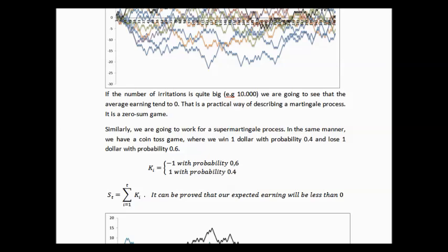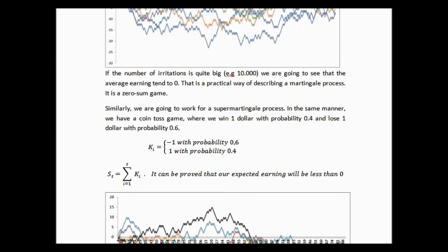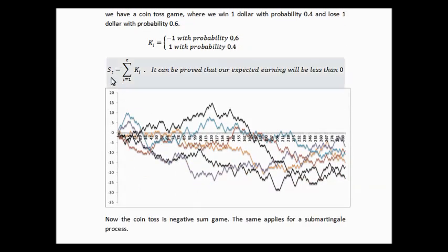Similarly, we are going to work for a supermartingale process. In the same manner, we have a coin toss game, where we win $1 with probability 40% and lose $1 with probability 60%. As we can see, it is more likely to lose in a coin toss. This is an unfair game for us. Again, our earnings could be described by a stochastic process S, which is simply the sum of all random variables for t coin tosses. It can be proved that our expected earnings will be less than 0.